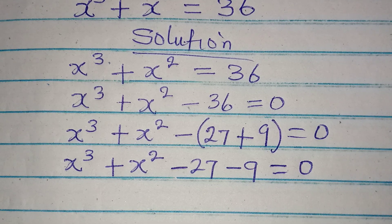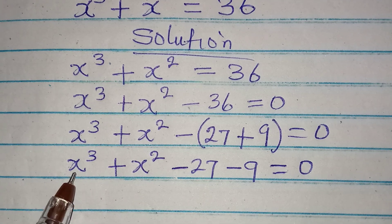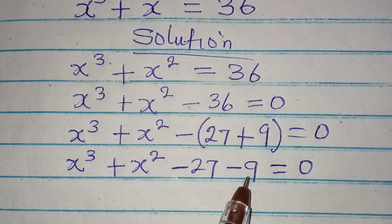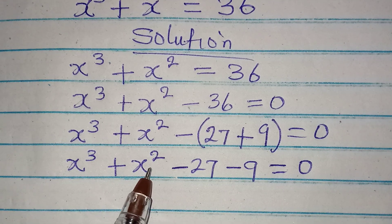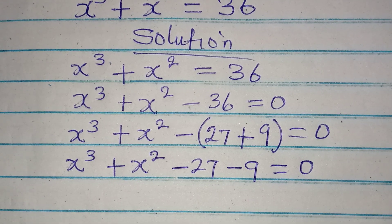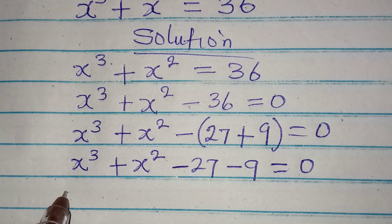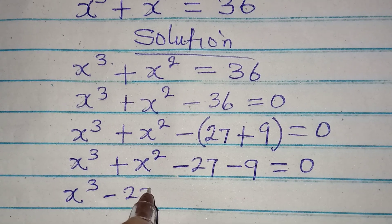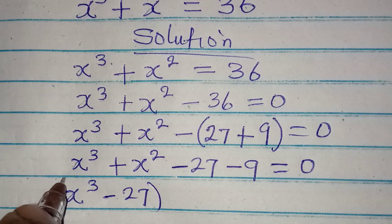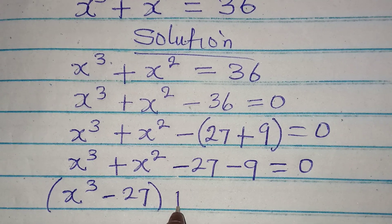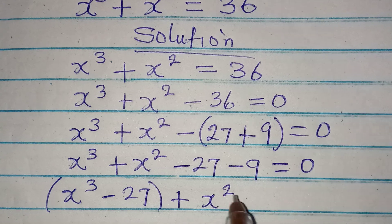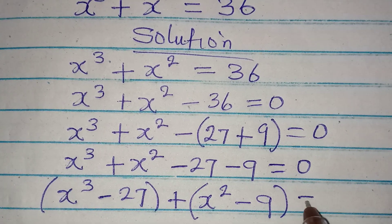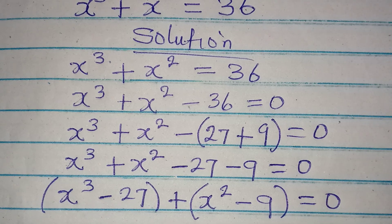We are going to group them. The first pair can be expressed to the power of 3, so we bring x to the power of 3 and negative 27 together. The second pair can be expressed to the power of 2, so we combine x squared and negative 9. This gives us x to the power of 3 minus 27 plus x to the power of 2 minus 9, all equal to 0.